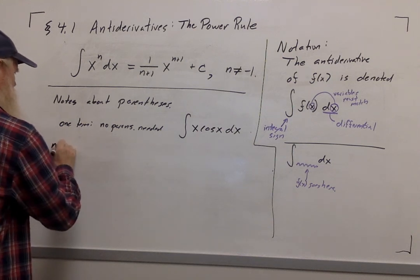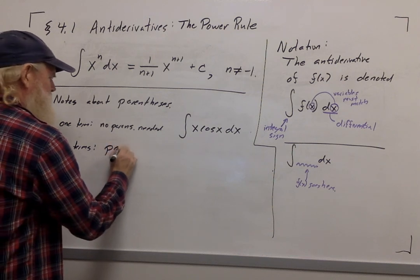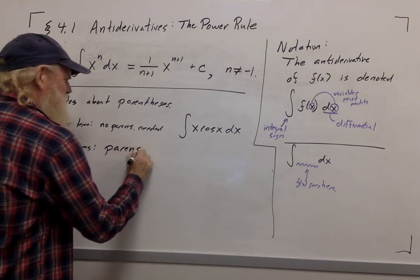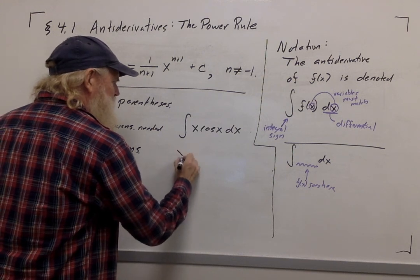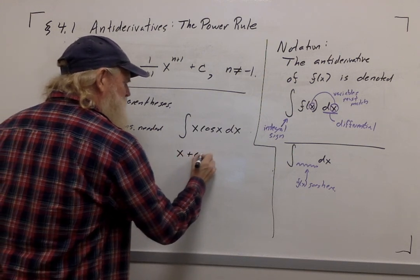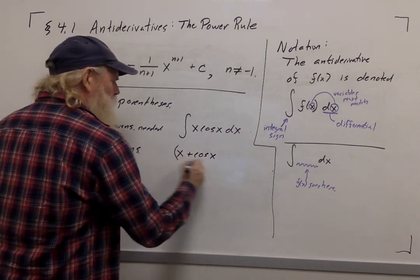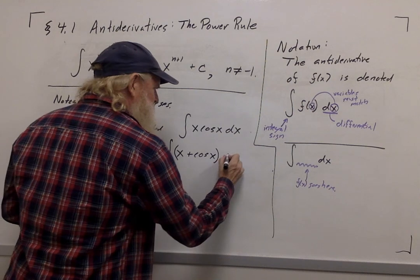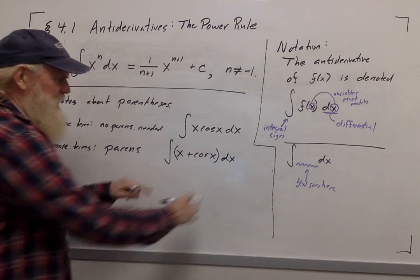But if there are more terms, then it's common practice to use parentheses. So for example, if I wanted the anti-derivative of x plus cosine x, where there are two terms, we would typically enclose those in parentheses inside the anti-derivative symbols.